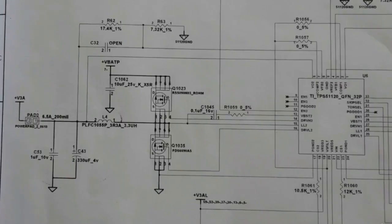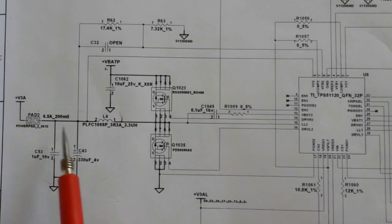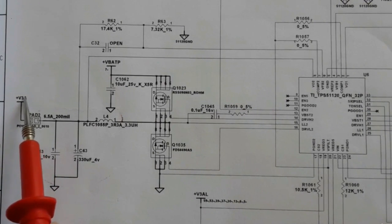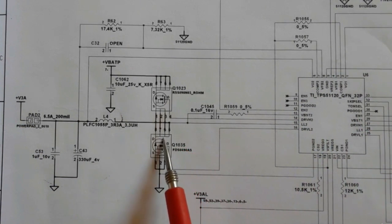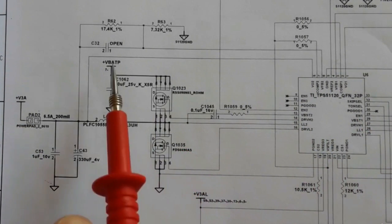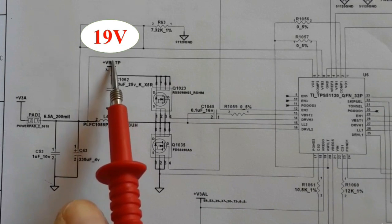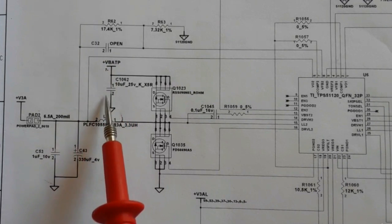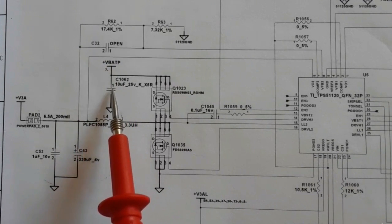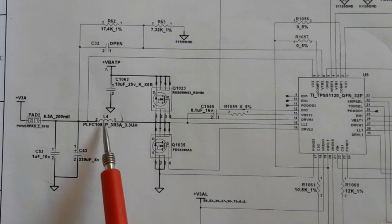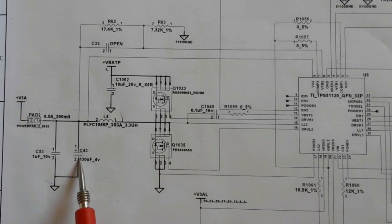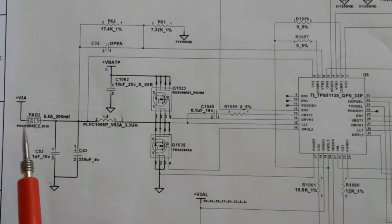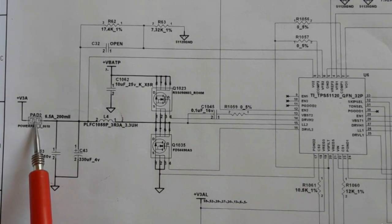Now let's look at the 3-volt channel. We have the power management IC, two MOSFETs, VBAT, a filtering capacitor, inductor L4, and two capacitors. This filtering capacitor is used to get a pure 3-volt output. There is also a test pad for this point.